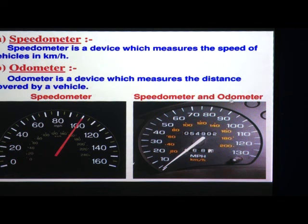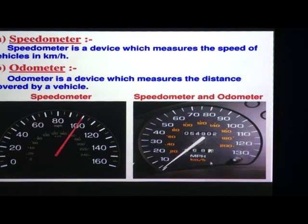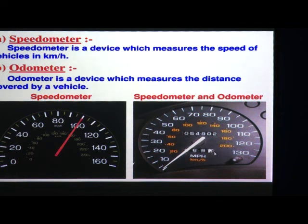In the second picture you can see both speedometer and odometer combined in the same meter. Here you can see digital numbers in between the dial markings. The numbers with the unit kilometer per hour are showing speed — that is the speedometer part. The numbers without units are showing distance — that is the odometer part. So both the speedometer and odometer can be seen together.